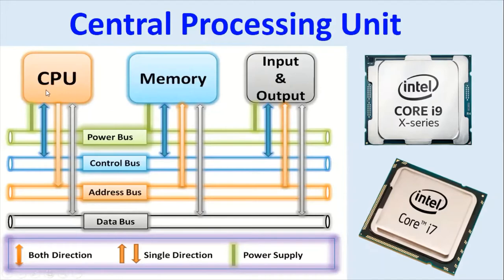On the left side of the block diagram we can see the CPU, memory, and input/output. Data is moving across the memory and CPU, and input/output devices. Buses are used to move data from one place to another. We can also see microprocessor pictures such as Core i9 and Core i7 — these are called central processing units or microprocessors.